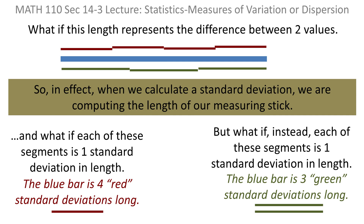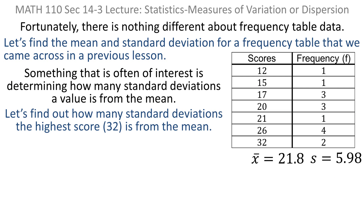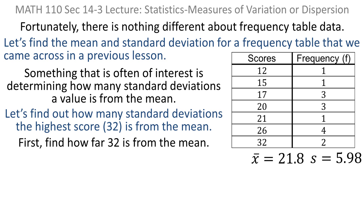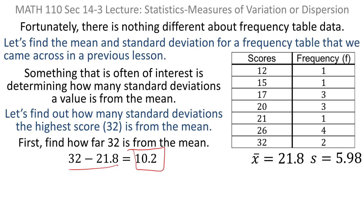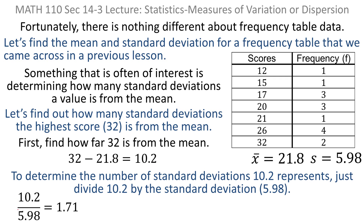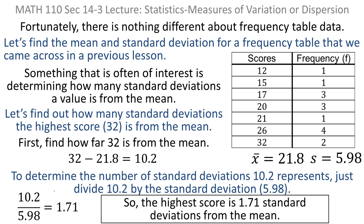Going back to the problem, we want to find how many standard deviations the highest score is from the mean. The highest score is 32; subtract the mean to get the deviation of the highest score from the mean. Then divide 10.2 by 5.98, and you get 1.71. So the highest score is 1.71 standard deviations from the mean. Standard deviations are like a measuring stick — you're measuring how many of them it takes to get from one place to the other.